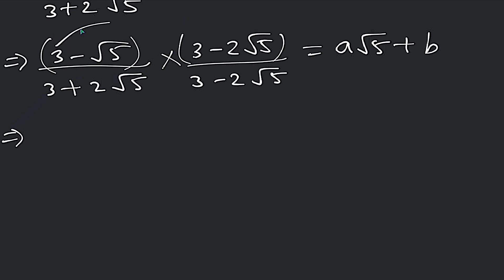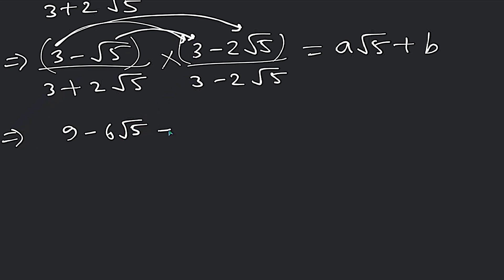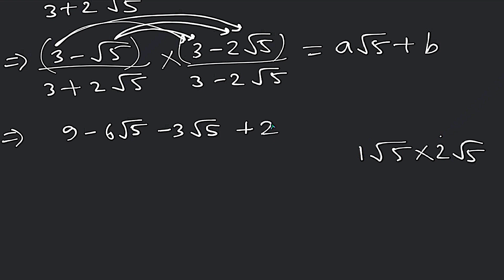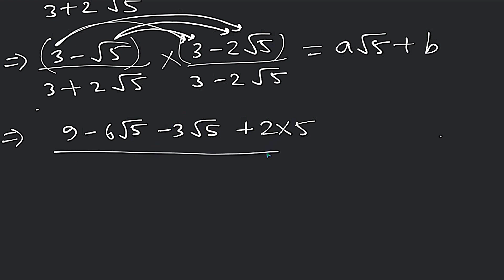We multiply by the conjugate: (3 + 2√5) over (3 + 2√5), changing the sign of the denominator from minus to plus. We change the sign of (2 - √5). So multiplying out: (3 + 2√5)(3 - 2√5) gives us, using a plus b times a minus b: 3² minus (2√5)², which is 9 minus 4×5 = 9 minus 20.